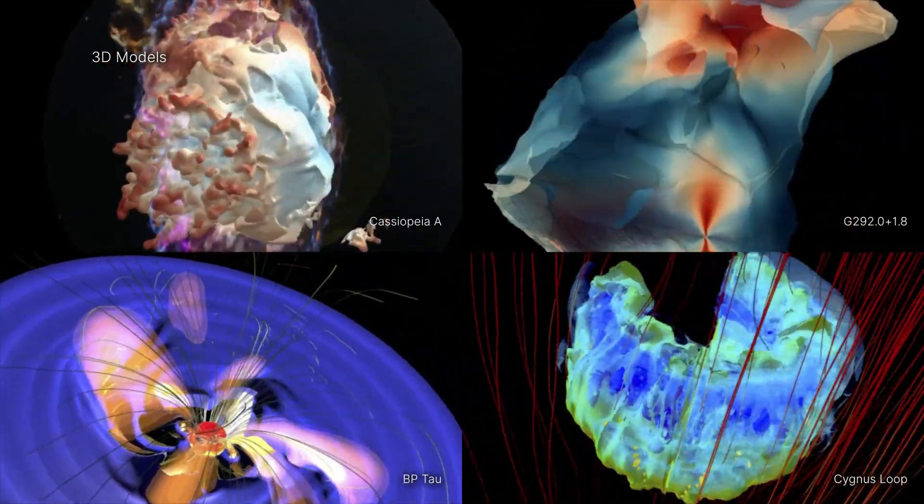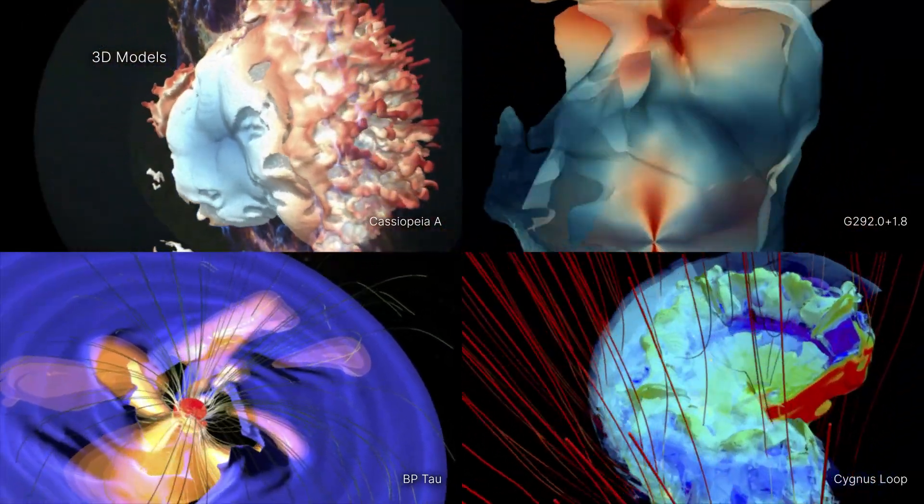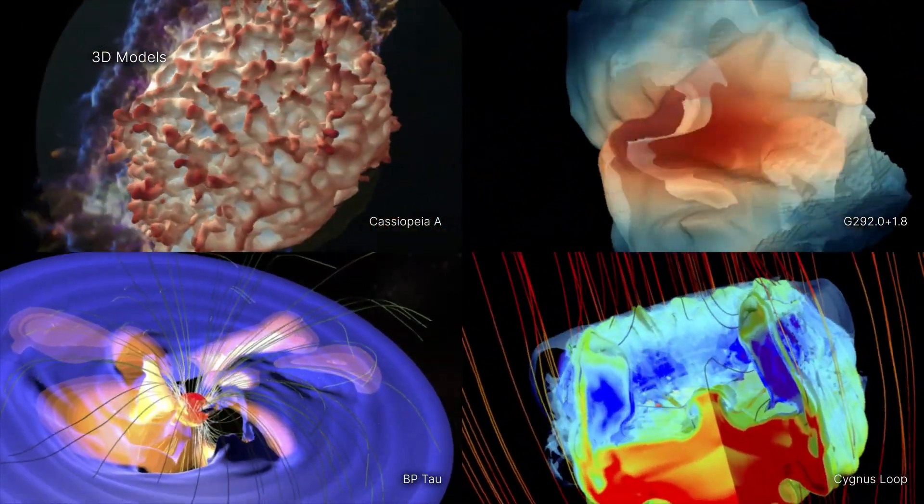New three-dimensional, or 3D, models of objects in space have been released by NASA's Chandra X-ray Observatory.